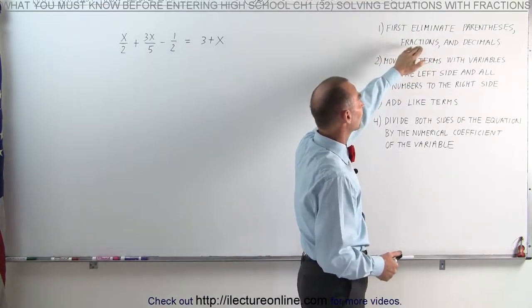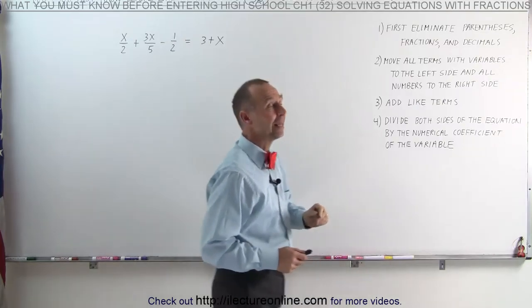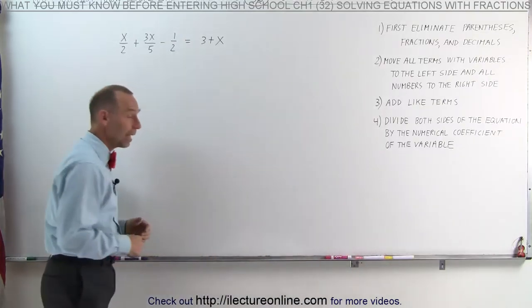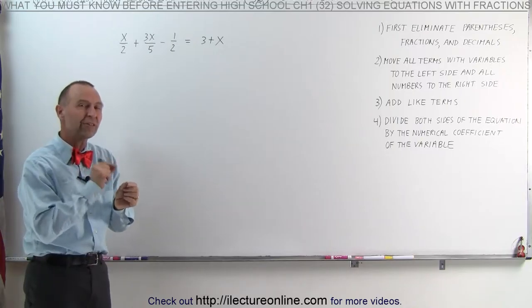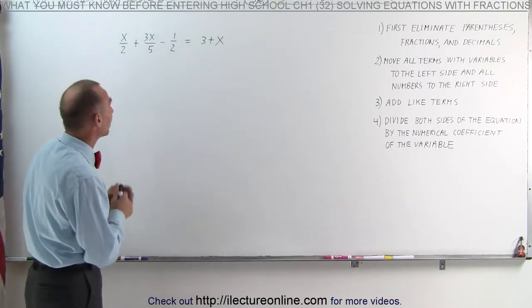First eliminate parentheses, fractions, and decimals. So let's go ahead and eliminate fractions. How do we do that? We must multiply both sides of the equation by the lowest common denominator.